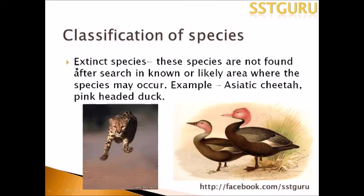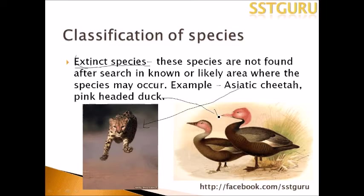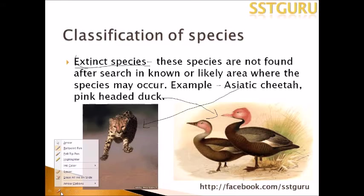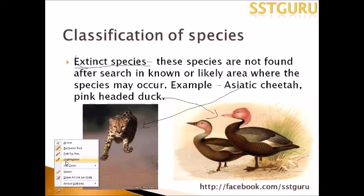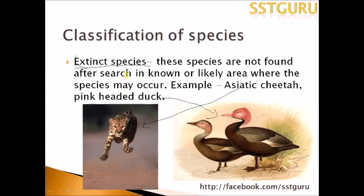Then comes Extinct Species. These are species that are no longer found after searches in known or likely areas where they may occur. Examples include the Asiatic cheetah and the pink-headed duck, which come under the extinct species category.